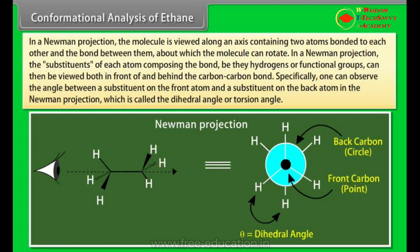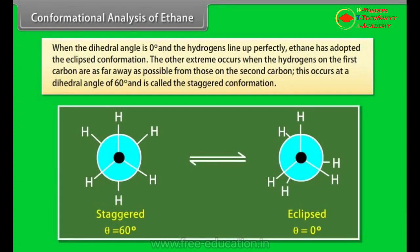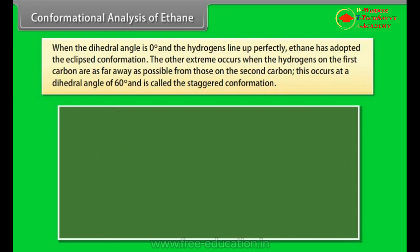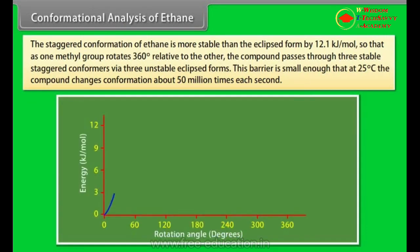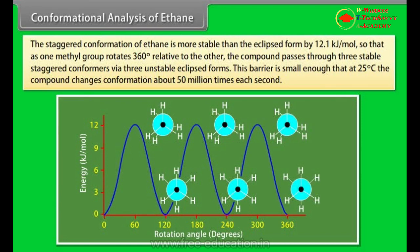In one case, the dihedral angle is zero degrees and the hydrogens on the first carbon line with or eclipse the hydrogens on the second carbon. When the dihedral angle is zero degrees and the hydrogens line up perfectly, ethane has adopted the eclipsed conformation. The other extreme occurs when the hydrogens on the first carbon are as far away as possible from those on the second carbon. This occurs at a dihedral angle of 60 degrees and is called the staggered conformation. The staggered conformation of ethane is more stable than the eclipsed form by 12.1 kJ per mole, so that as one methyl group rotates 360 degrees relative to the other, the compound passes through three stable staggered conformers via three unstable eclipsed forms. This barrier is small enough that at 25 degrees Celsius, the compound changes conformation about 50 million times each second.